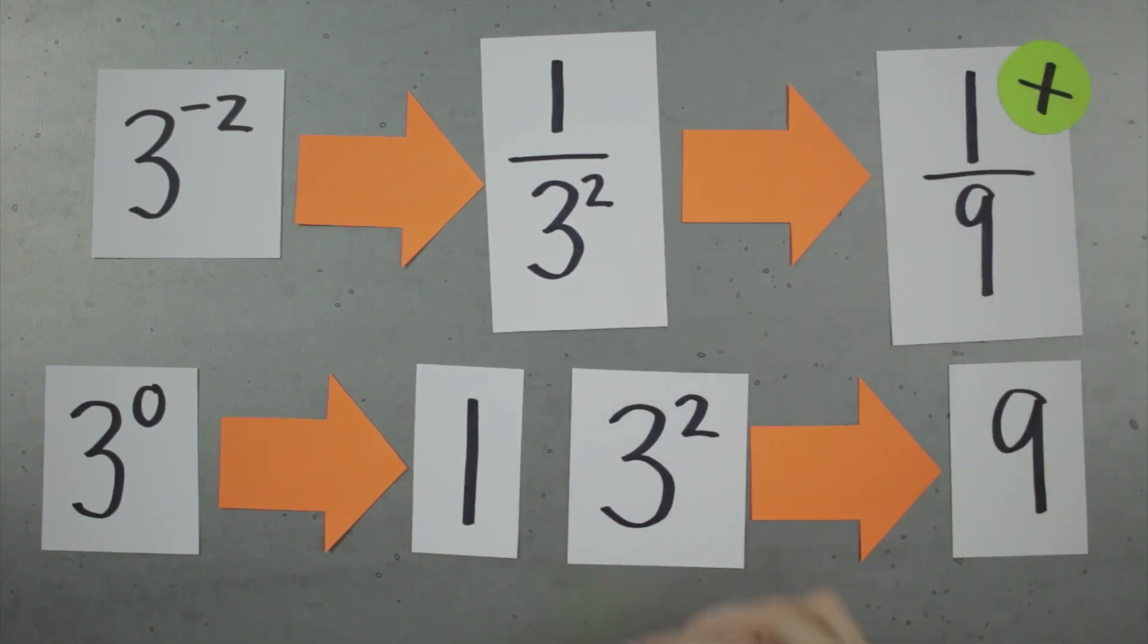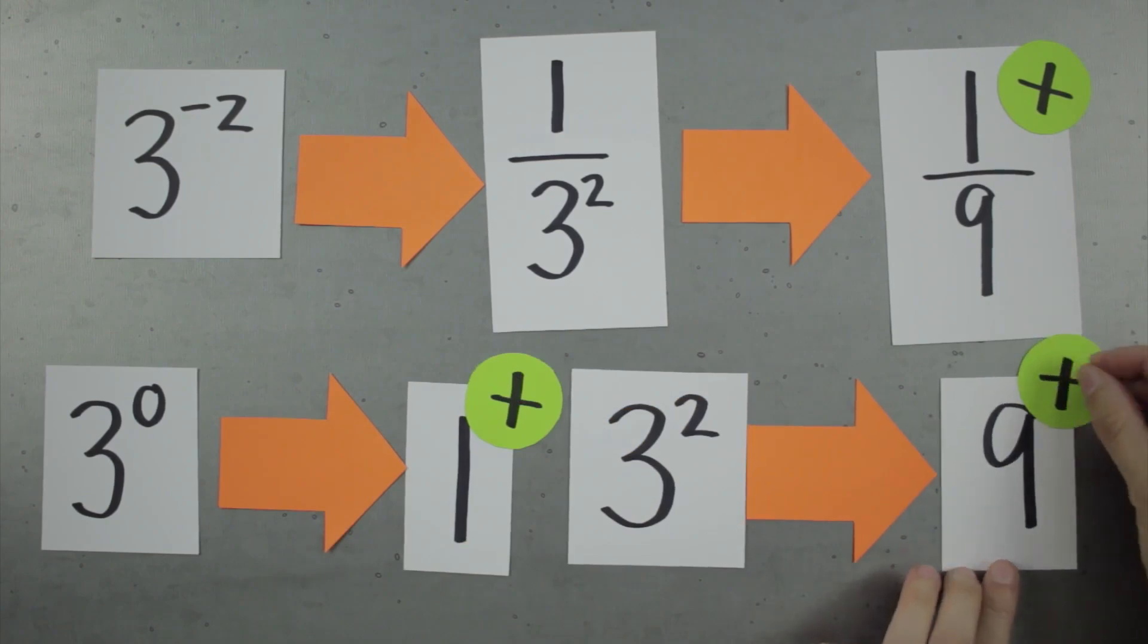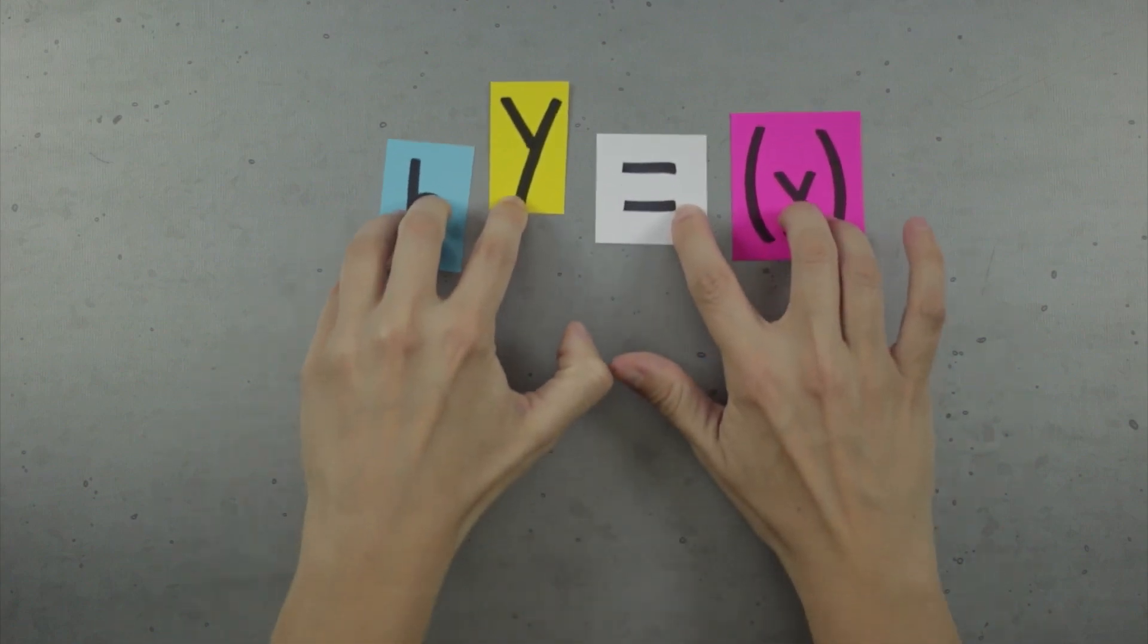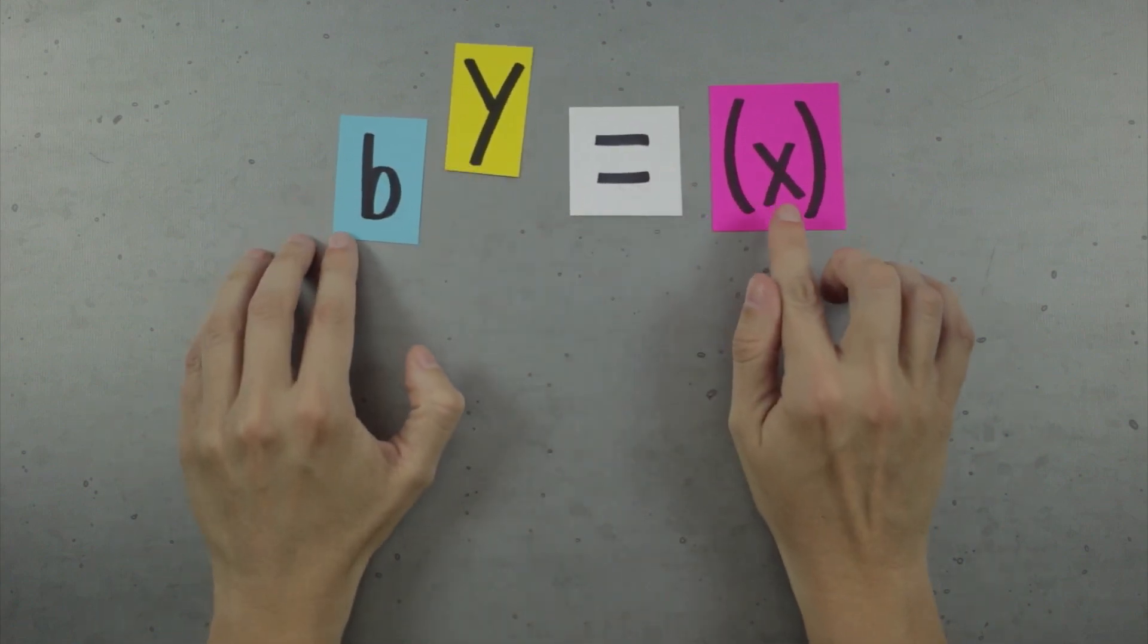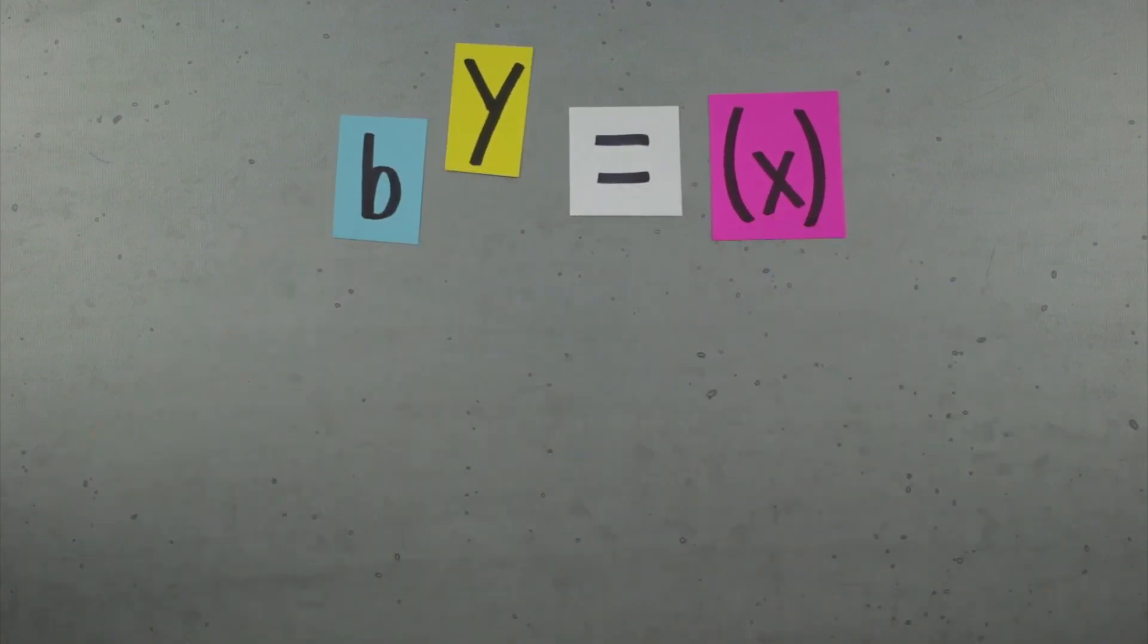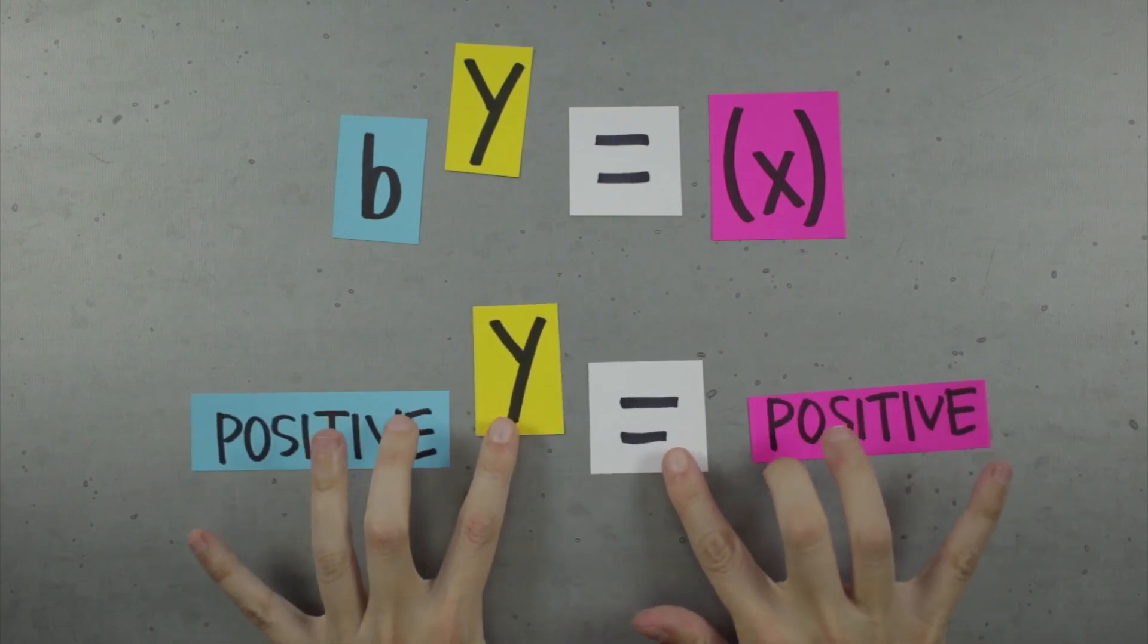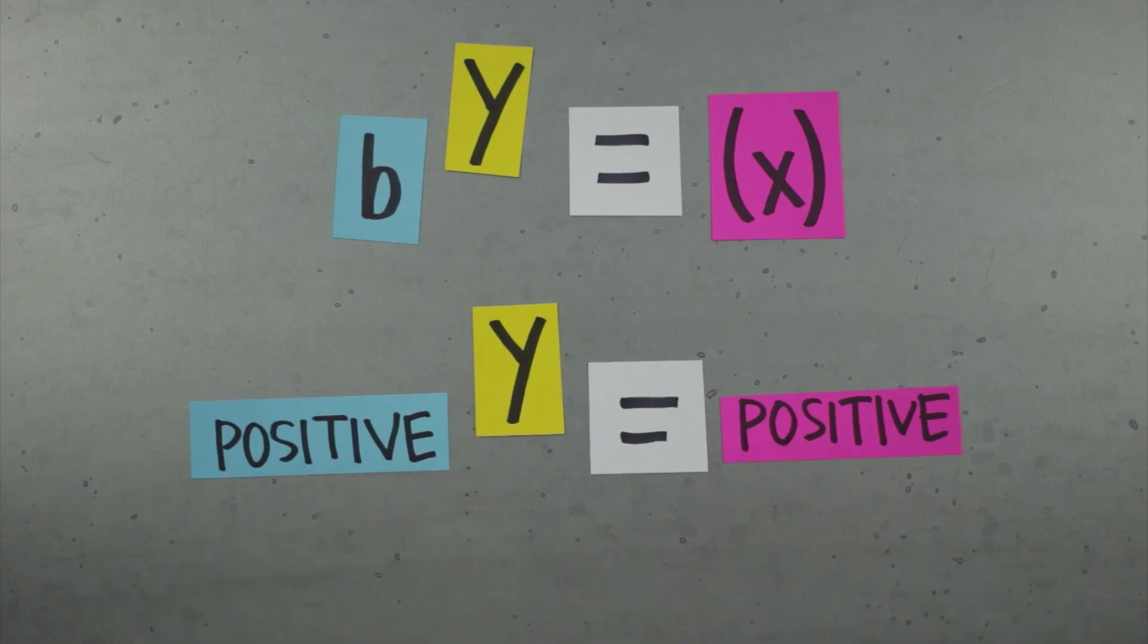In other words, a positive number, no matter what you raise it to, is going to be a positive number. So because we're saying that the base of the logarithm has to be a positive number, other than 1, in order for the log to be defined, that means b is always going to be positive, which means that x is always going to be positive too.